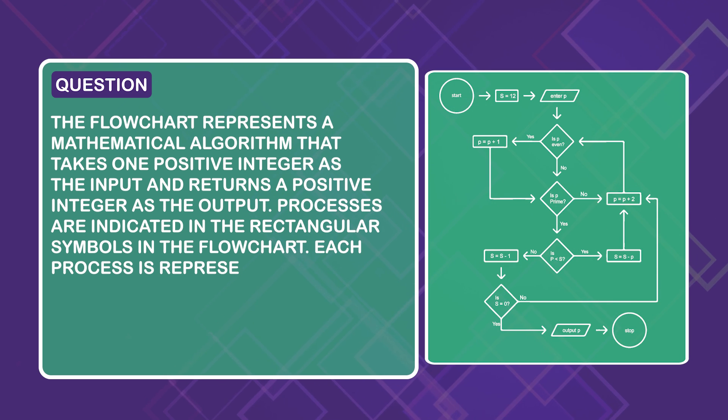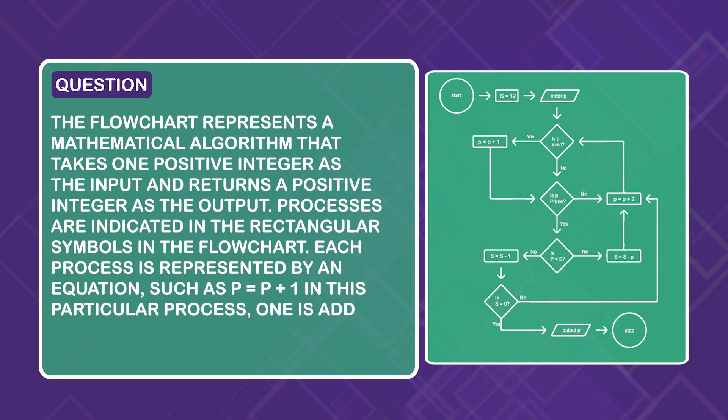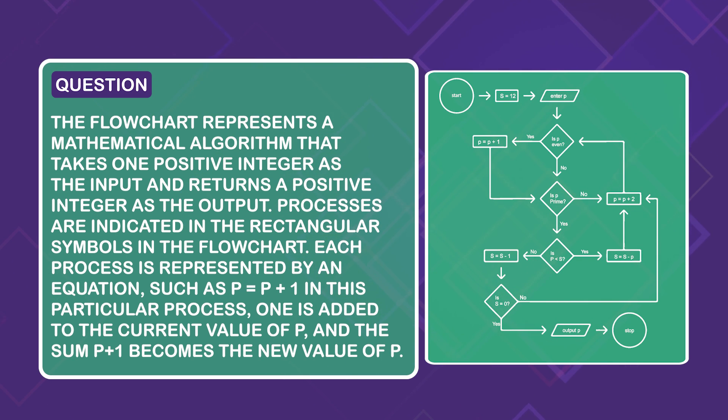Each process is represented by an equation, such as p equals p plus 1. In this particular process, one is added to the current value of p, and the sum, p plus 1, becomes the new value of p.